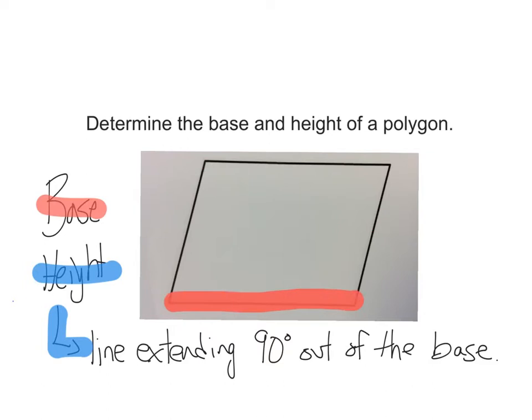Now again, my height is a line extending 90 degrees out of the base. If we trace this other side, that's not 90 degrees. So we can't use these sides as the height. We need to draw in the height ourselves, going at a 90 degree angle extending from the base to the other top side.